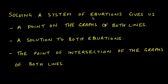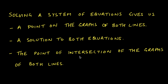When we solve a system of linear equations, it gives us the location of the point that's on both lines. That point is a solution to both equations simultaneously, and the only way that can happen is if it's the point of intersection. So solving a system of equations means finding where two functions intersect.